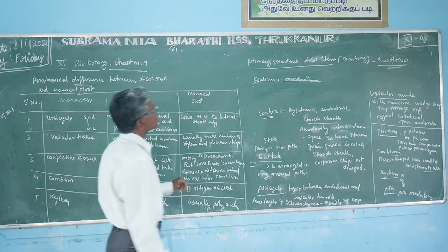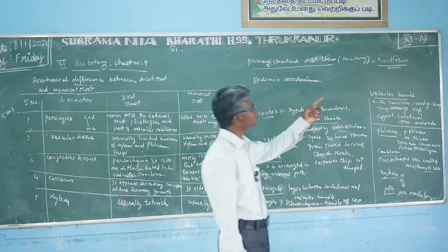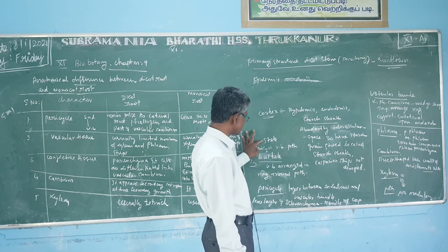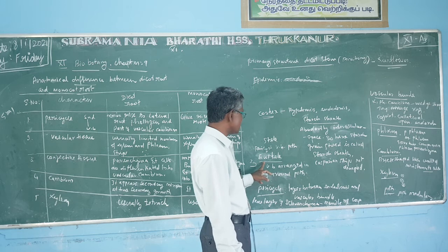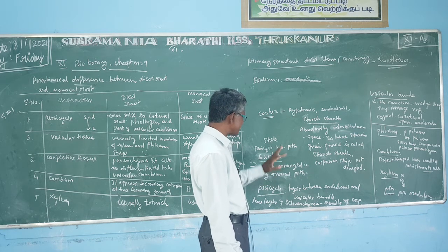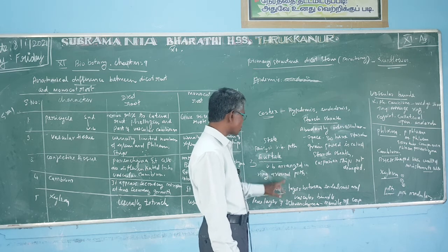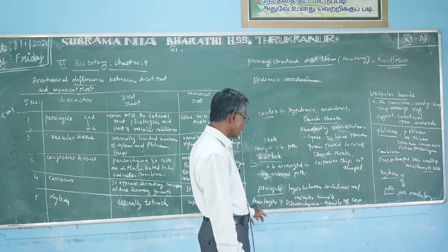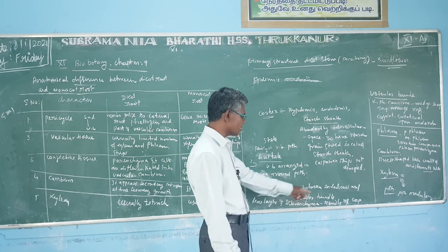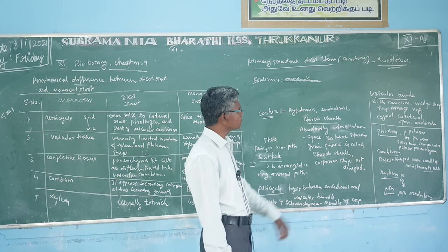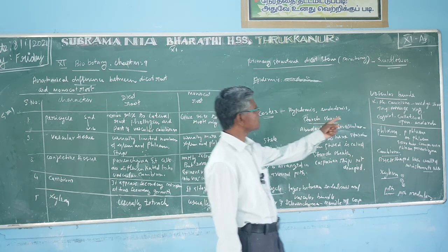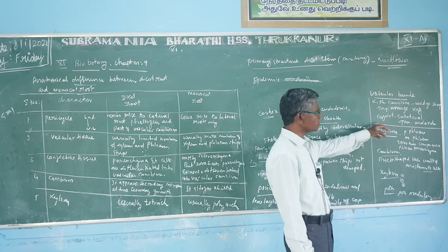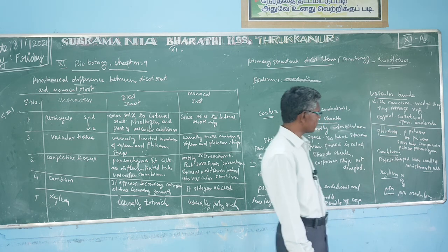That is all about the primary structure of dicot stem, for example sunflower. In summary: the epidermis and cortex form the outer layers; a specific type of stele called eustele is present — a ring-like arrangement of vascular bundles around the pith. In the pericycle, a few layers of sclerenchyma form the bundle cap, providing mechanical strength. The vascular bundle is conjoint, collateral, open type with endarch arrangement.